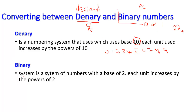Then we have another numbering system, which is binary numbers — the ones inside the computer, what the computer understands. It is a system of numbers with a base of 2. Binary numbers use only 0 or 1 — those are the two numbers, giving us a base of 2. Each unit increases by the powers of 2, starting from the right to the left. These are the two most common numbering systems — binary for the computer and decimal for us. We're also going to cover the octal and hexadecimal numbering systems later.